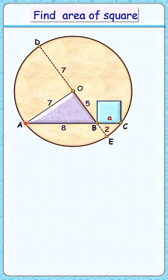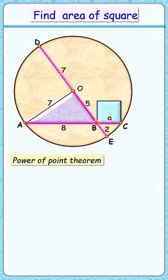With respect to the circle, AC is a chord and DE is a chord intersecting at point B. Applying the power of point theorem, we get AB times BC equals DB times BE. Putting the values here,